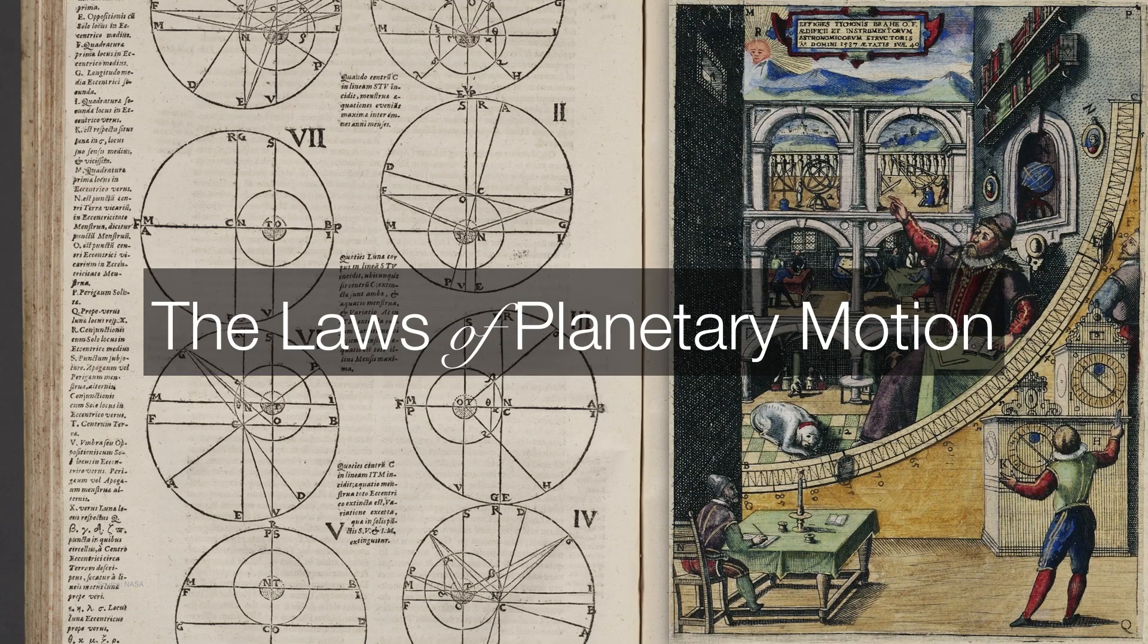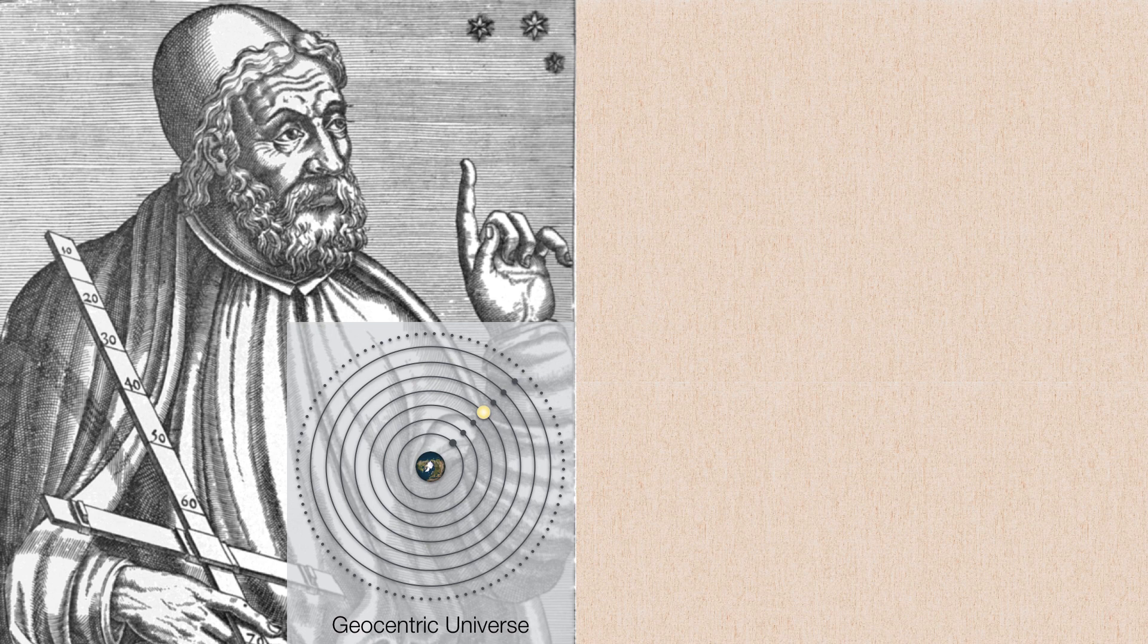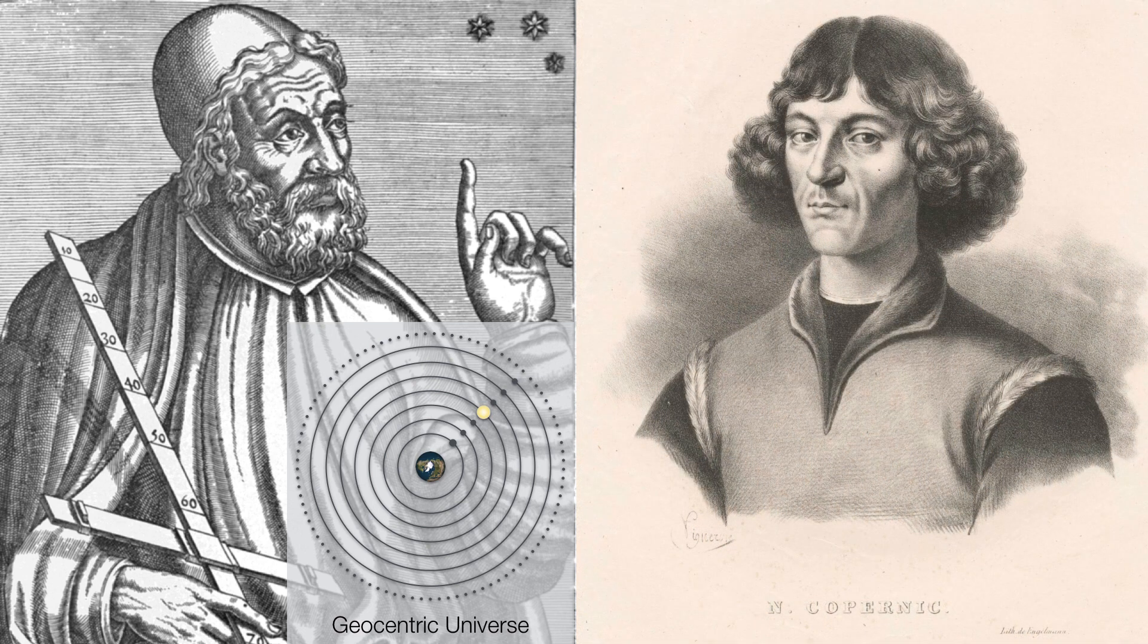By the 16th century, the laws of planetary motion were being challenged by new thinking, largely led by Nicholas Copernicus and those who followed him.